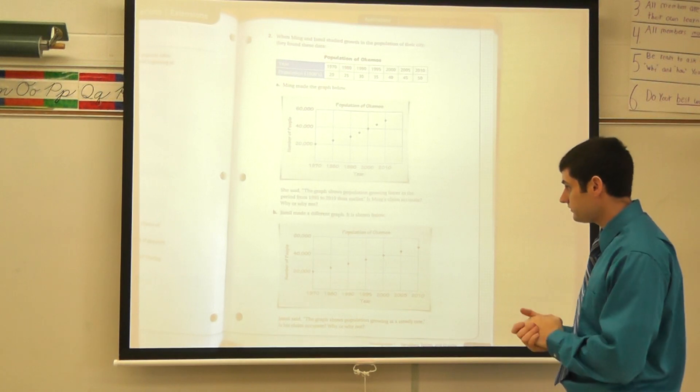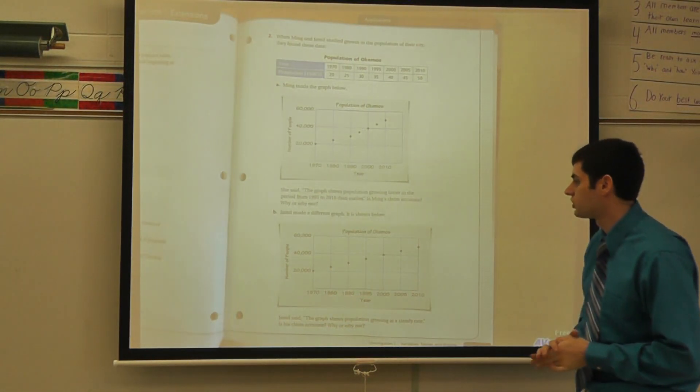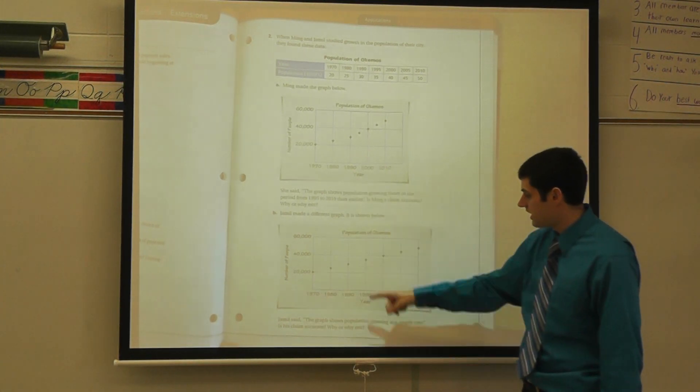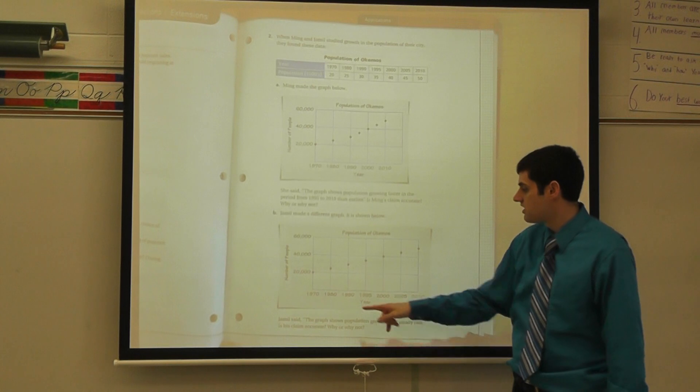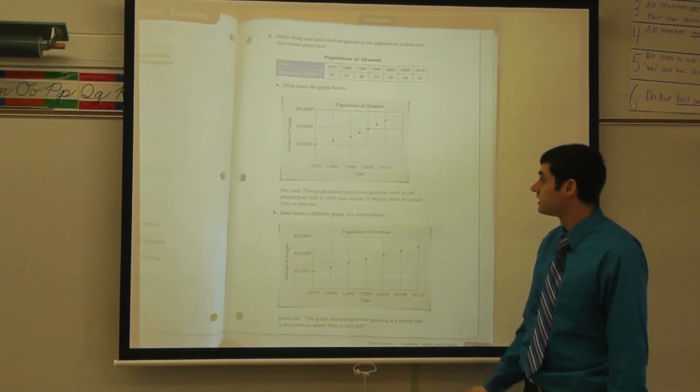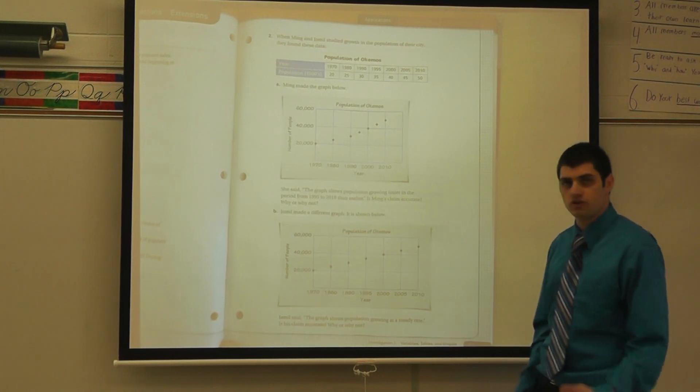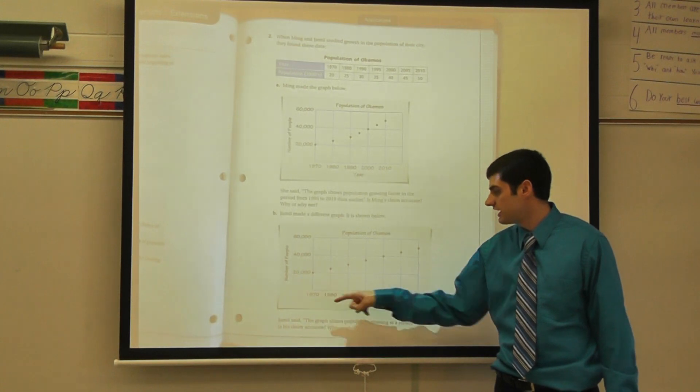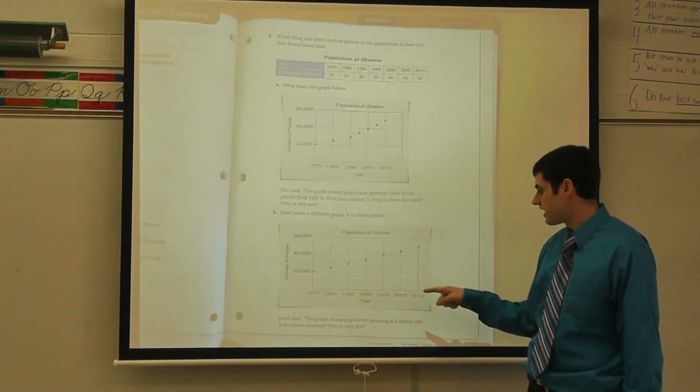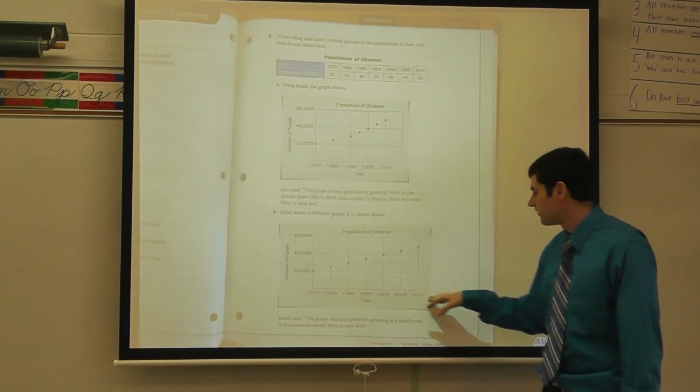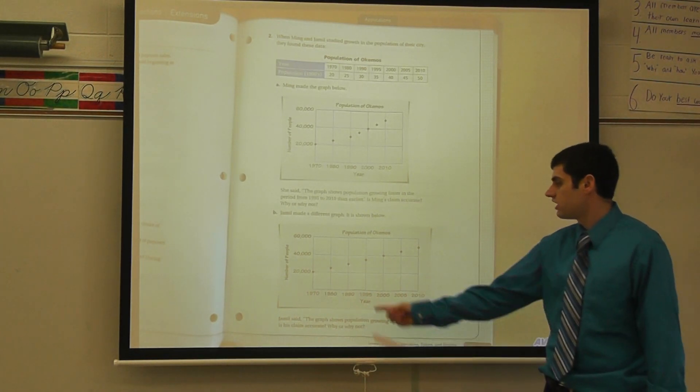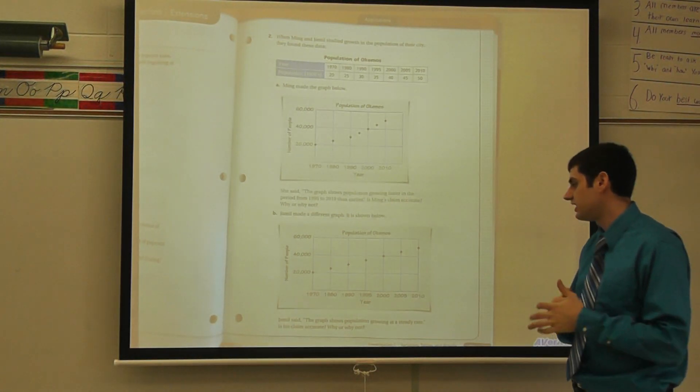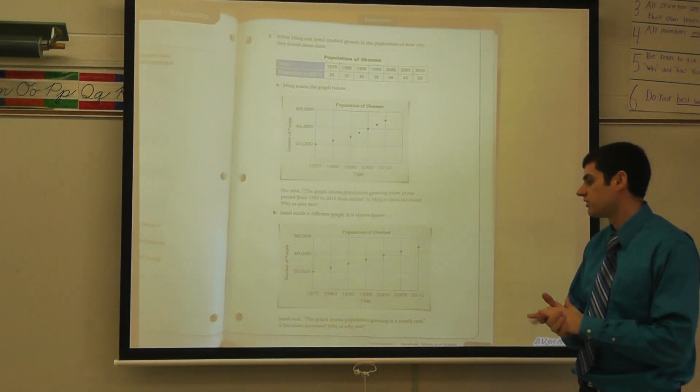Let's take a look at Jamil. They made a different graph and it was shown below. So I see number of people on the side here, same as the y-axis up there. The year was the same on the x-axis. Population of Okemos, they titled their graph, which is important. Their interval was 20,000 here. 1970, 80, 90, 95, 2000, 2005, 2010. So I see that they charted or plotted out their graph. He says that the graph shows population growing at a steady rate. Is his claim accurate? Why or why not?